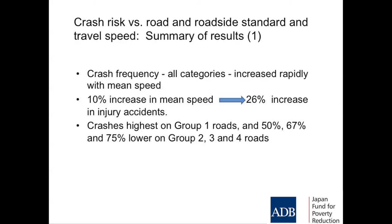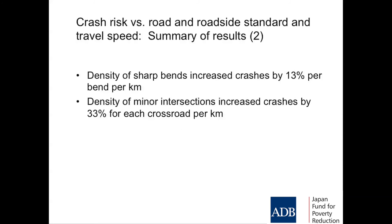You can pick sections that are safe and sections that are not safe. Most interesting: the density of sharp bends increased crash risk by 13%, but an extra intersection per kilometre increased crashes by 33%. So we need to know where to go fishing, and this sort of data helps us understand that.